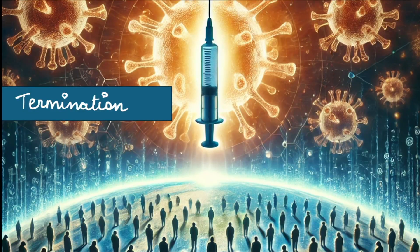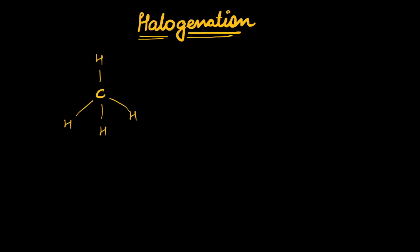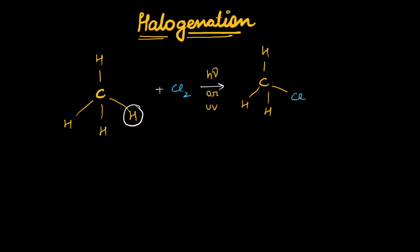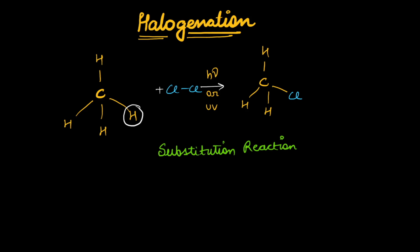Similar thing is going to happen in halogenation. What is halogenation? Say this hydrogen out here — if I replace this hydrogen with a chlorine, halogen has come at the place of hydrogen. So this is halogenation: hydrogen has been substituted by a chlorine. This is a substitution reaction where a chlorine has substituted one hydrogen.